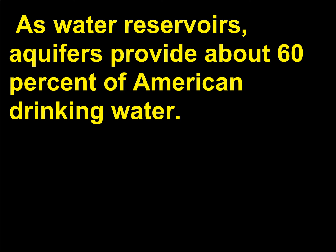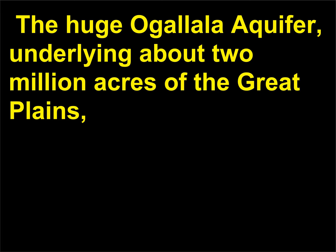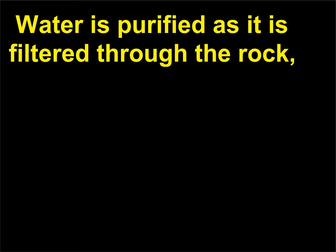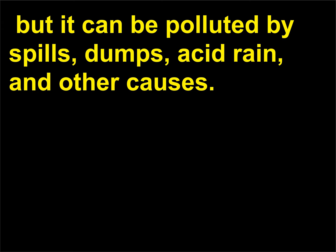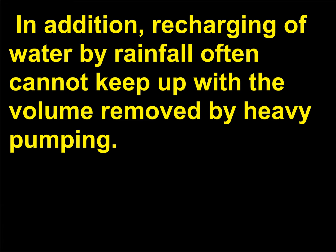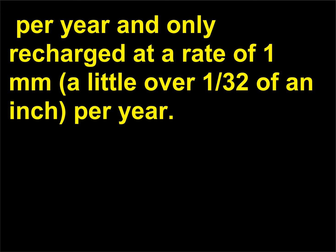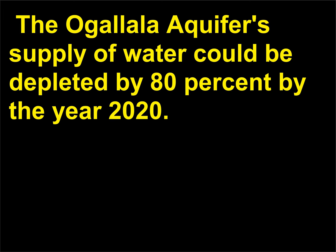As water reservoirs, aquifers provide about 60% of American drinking water. The huge Ogallala aquifer, underlying about 2 million acres of the Great Plains, is a major source of water for the central United States. Water is purified as it is filtered through the rock, but it can be polluted by spills, dumps, acid rain, and other causes. In addition, recharging of water by rainfall often cannot keep up with the volume removed by heavy pumping. In some areas, the aquifer has been decreasing by 3.2 feet (1 meter) per year and only recharged at a rate of 1 millimeter per year. The Ogallala aquifer's supply of water could be depleted by 80% by the year 2020.